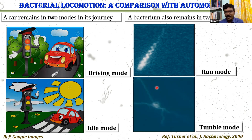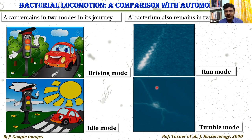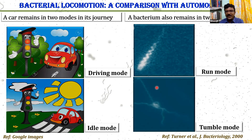A bacterium is a brainless organism. How and why does it perform its locomotion? It performs locomotion to find its food. Bacteria actually sense the chemical cues emitted from the food. When the chemical cues are in the right direction, bacteria performs the run mode. Whereas if the direction is wrong, bacteria pauses itself and changes its direction. This pause phase is called the tumble mode.